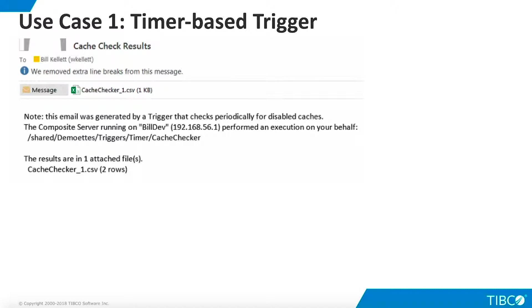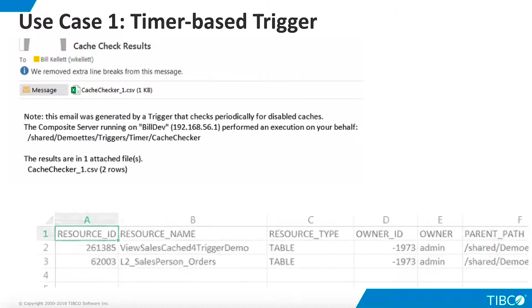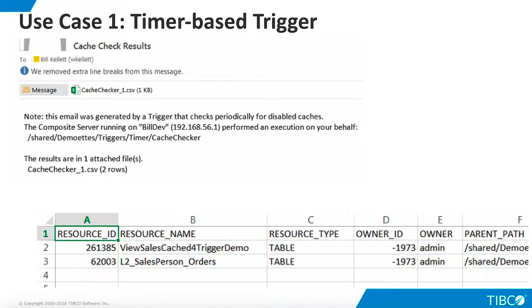When the trigger executes, we receive the email shown here. The attached CSV file shows the output of the cache checker procedure, which lists detailed information for all disabled caches.